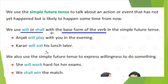We also use simple future tense to express willingness to do something. Suppose you want to do your homework — you are willing to do it. That time also we will use simple future. For example: She will work hard for her exam — she herself is willing to do that. She wants to work hard, so she will work. And: We shall win the match — shall then win. This way we can create the simple future tense.